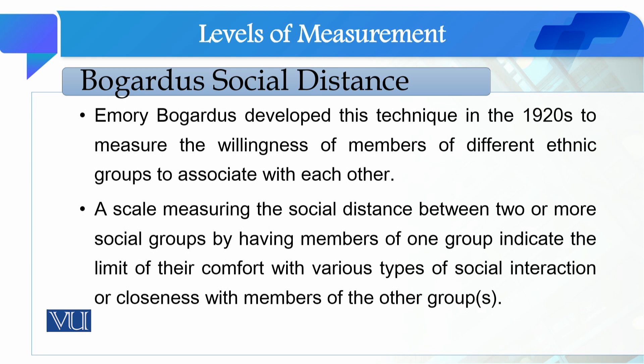This scale measures the social distance between two or more social groups by having members of one group indicate the limit of their comfort with various types of social interaction or closeness with members of other groups.